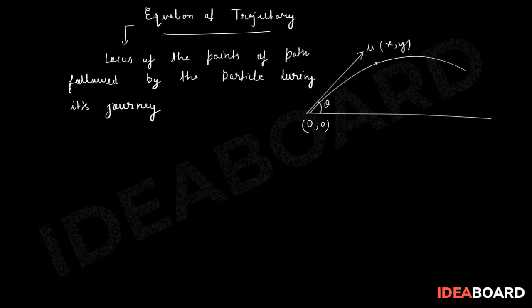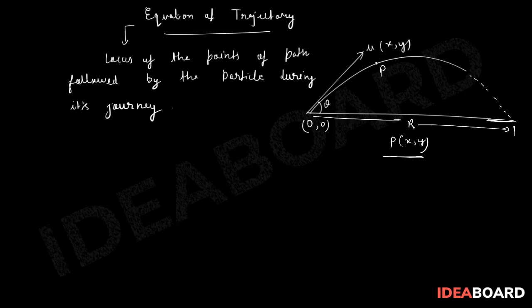Basically, suppose I take any random point P with coordinates (x, y), assuming the origin is at O. Our task is to find the equation of trajectory so we can locate any random point at a particular instant. If I draw the full path, it will be a curve, and this horizontal distance covered is called the range.